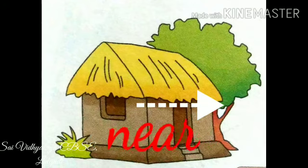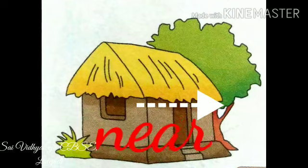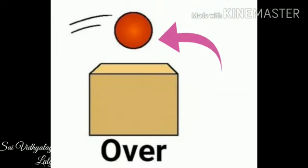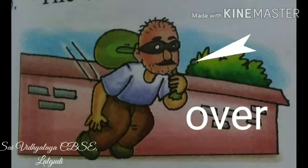The ball is above the tree. And now the ball is over the box. Look at this one — the thief jumped over the wall.